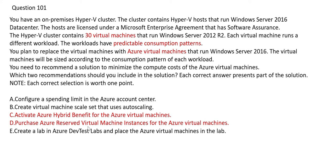Option D suggests using Reserved Virtual Machines, which provides significant cost benefits compared to on-demand pricing. Because you know the consumption pattern is predictable, you can reserve virtual machines in advance. For example, if the pattern requires 10 VMs, you book 10 reserved instances and can gain 30 to 40 percent in cost savings. So option D is the second correct answer.